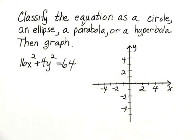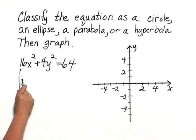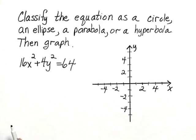Classify the equation as a circle, an ellipse, a parabola, or a hyperbola, then graph. The equation is 16x squared plus 4y squared equals 64.